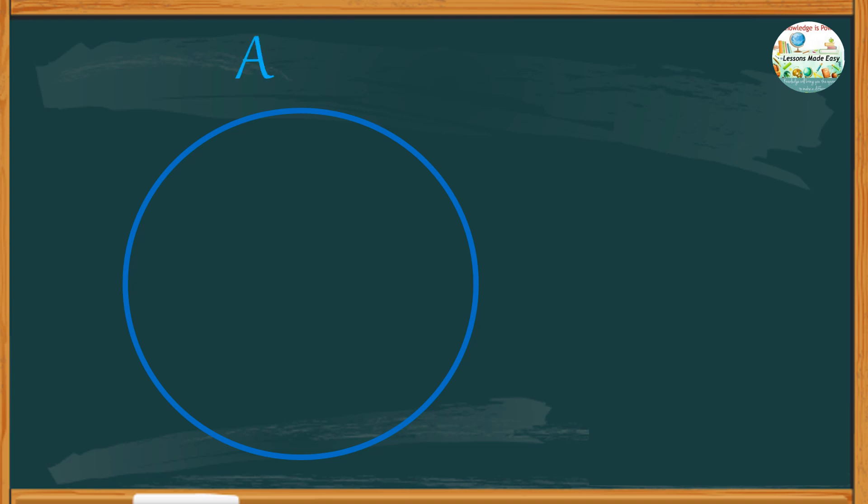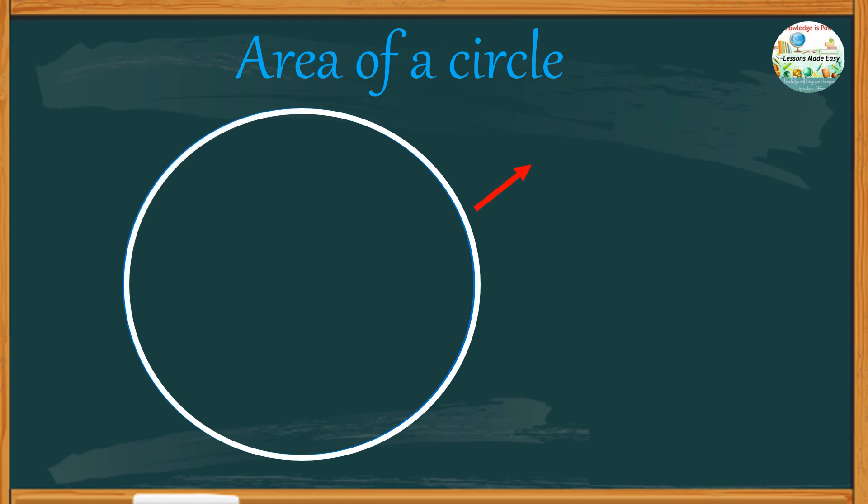To be able to calculate the area of a circle, we must first understand some of its important parts and properties. The distance around the circle is called the circumference. Any edge in the circumference shares equal distance from the center.